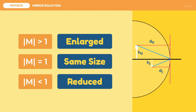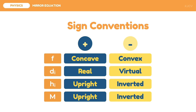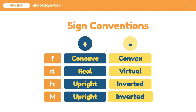We also need to be careful with sign conventions. For focal length, a positive value means the mirror is concave; if negative, it is convex. For the image distance, if it is positive, the image is real, meaning it is formed in front of the mirror. If negative, the image is virtual, formed at the back of the mirror. For the image height, positive means upright and negative means inverted. Similarly, for magnification, a positive value means upright and a negative value means inverted.